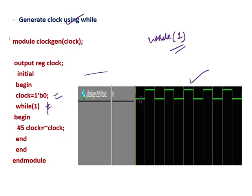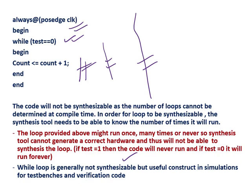So, to summarize: this while loop is not synthesizable, but it is a very useful construct during our functionality check — that is, when we verify our logic during test bench writing. If asked why it is not synthesizable, you can say that during compile time, your synthesis tool won't be able to know how many times the logic is going to run. If the number of iterations is not known during compile time, then generating hardware is very difficult. That is one of the reasons why while loops are not synthesizable.